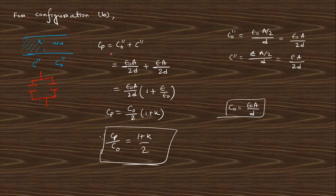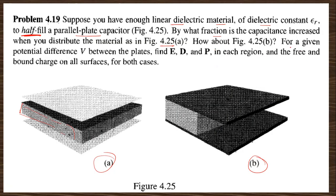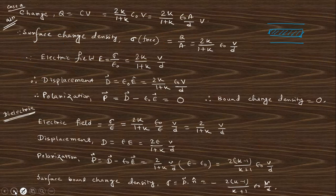Putting the two capacitance values into the parallel combination formula, since for parallel combination the capacitances add directly, substituting gives the expression for C_p. The next part of the question asks: for a given potential difference V between the plates, find the electric field, displacement, polarization in each region, and the free charge density for both cases.